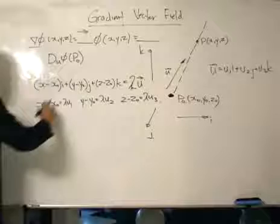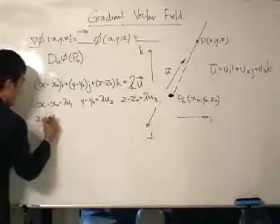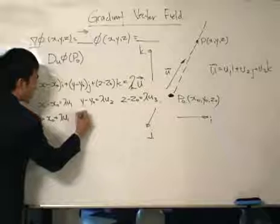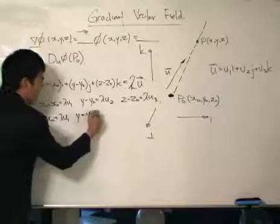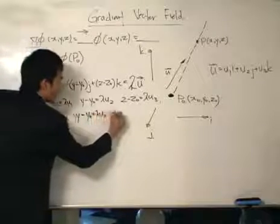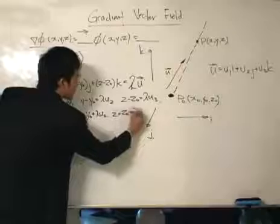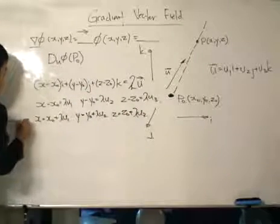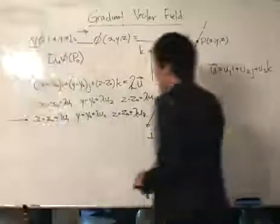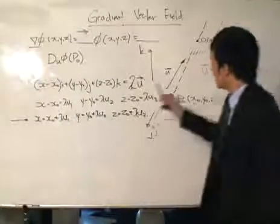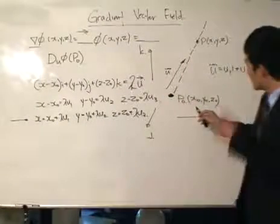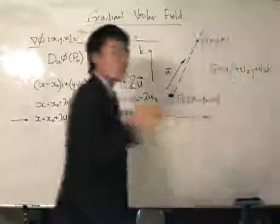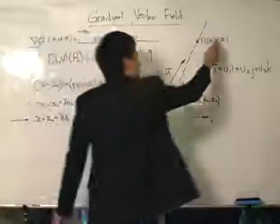Now let's rearrange to write it as this: x is x₀ + λu₁, y equals y₀ + λu₂, and z equals z₀ + λu₃. We've got x, y, and z. So what does this equation tell us? This equation tells us that if we got P₀ defined by x₀, y₀, and z₀, and we want to find the value of x, y, and z.